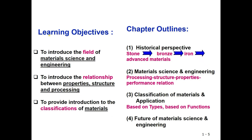There are three learning objectives for Chapter 1. First, to introduce the field of material science and engineering. Second, to introduce the relationship between properties, structure, and processing of materials. Third, to provide an introduction to the classification of materials, or the types of materials.